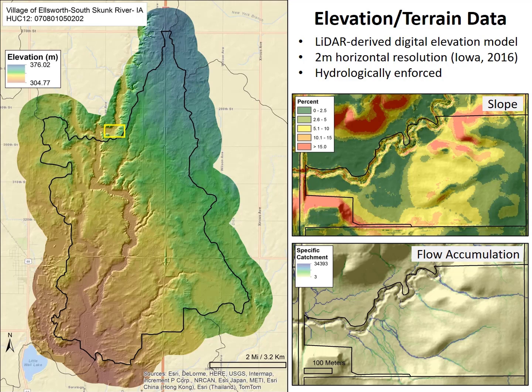Elevation data is the most important component of the database because these are the data that tell us how water flows across the land surface. Most of the conservation practices we work with in the ACPF address water flow on the land surface, so an accurate representation of the land surface and its hydrology is critical for conservation planning at the small watershed scale. The high-resolution elevation data are typically derived from light detection and ranging, or LiDAR, surveys. LiDAR data provide the detail needed to capture the nuance of the landscape necessary for identifying specific locations for individual conservation practices, enabling detailed assessments of critical terrain attributes such as slope and concentrated flow.